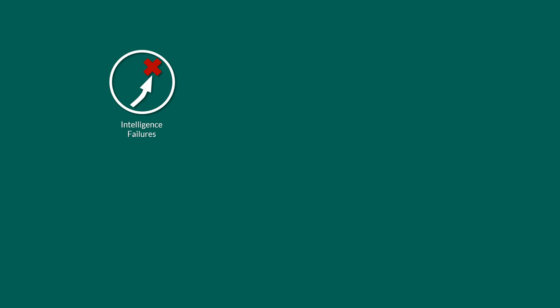In this video we will look at various reasons why intelligence failures happen, and also why most measures that try to reduce the problems don't work. For the uninitiated, we start with a little introduction into intelligence itself.